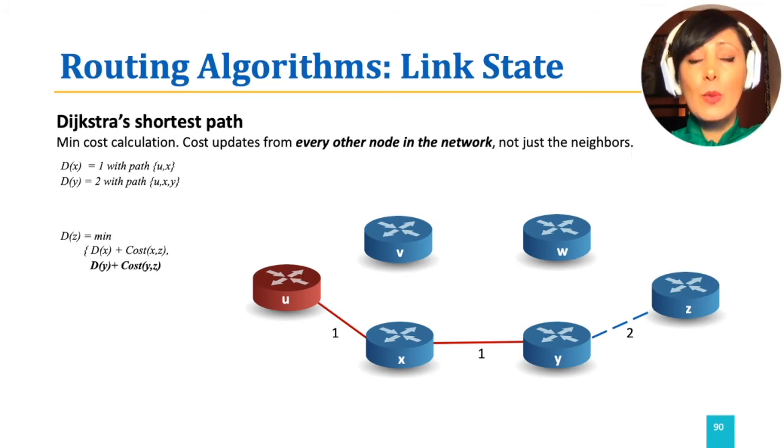So at this step, we have a path to Z, which is through node Y. At this step of the algorithm, the path to node W will also be updated to V through node Y and with value 3.